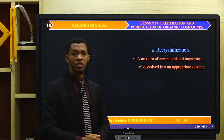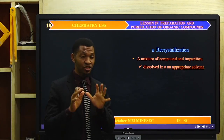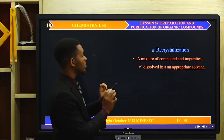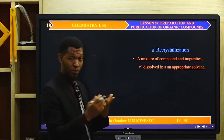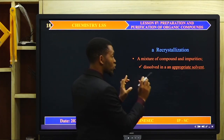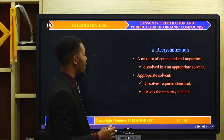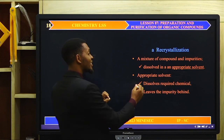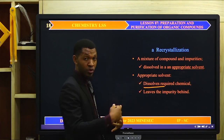Let's begin with recrystallization. Recrystallization is used to purify organic compounds. In this method, the mixture of the compound and the impurity is dissolved in an appropriate crystallization solvent. The solvent must be one that readily dissolves the compound we want to purify while leaving the impurity behind.